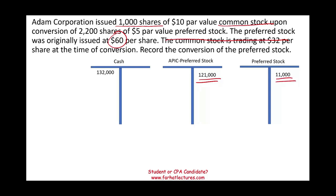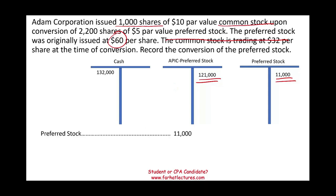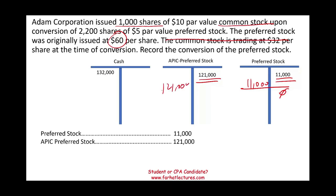Now, what we are going to do is eliminate those preferred stock shares and, in return, issue common stock. Let's start with eliminating the preferred stock. We are going to debit preferred stock $11,000 to bring it down to zero, and debit preferred stock APIC $121,000 to bring that down to zero as well. Now we have removed the preferred stock, but we're only halfway through.